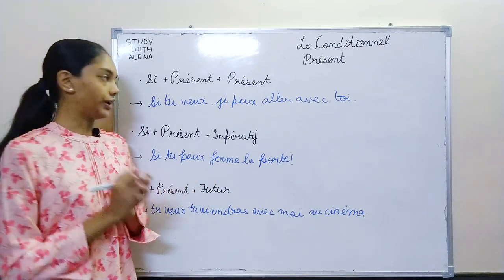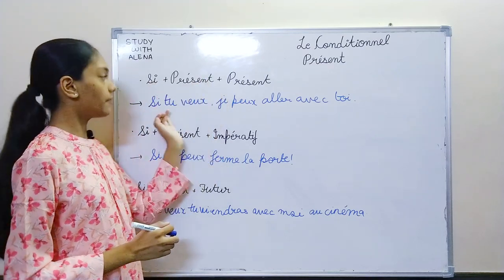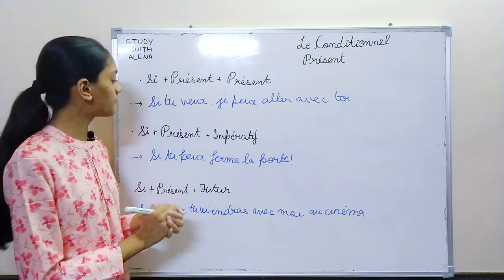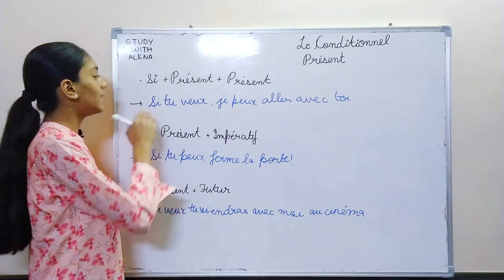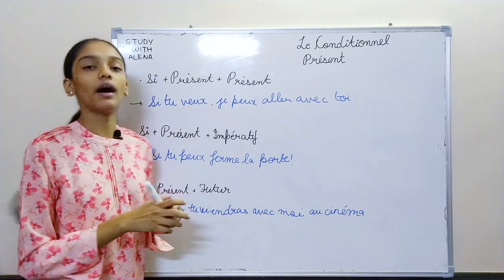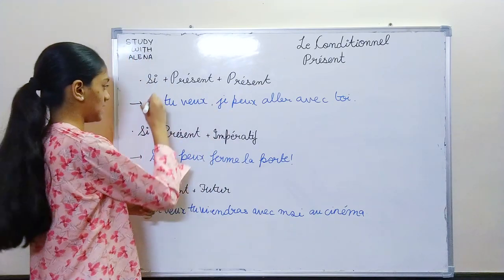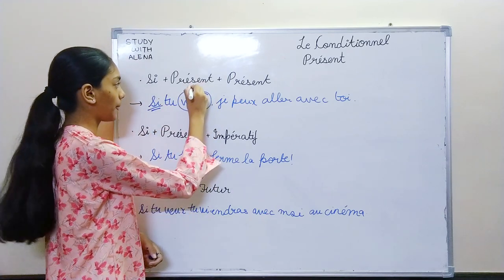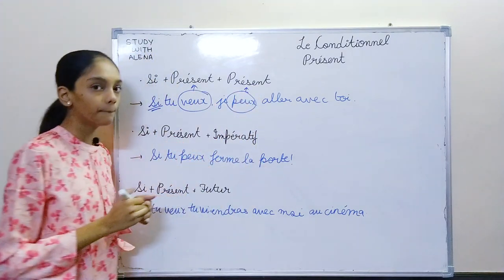When we have si and present, then we can write the next verb conjugated in present, in imperatif, or in future. For example: 'Si tu veux, je peux aller avec toi' — if you want, I can come with you. So si, veux in present form, and peux also in present form.